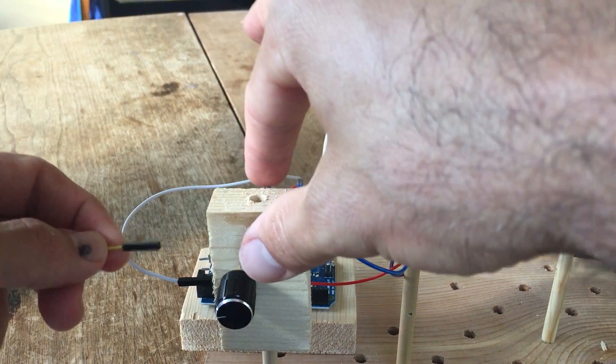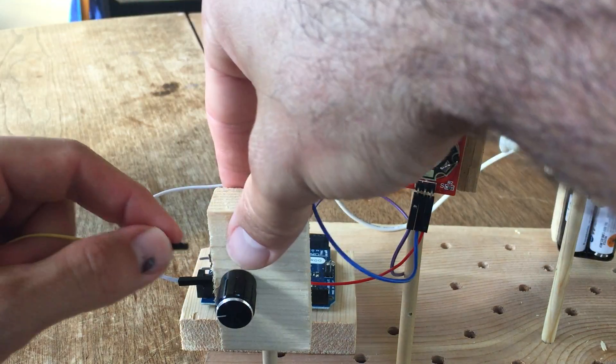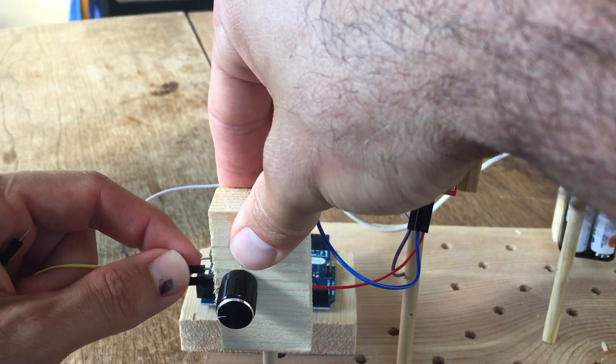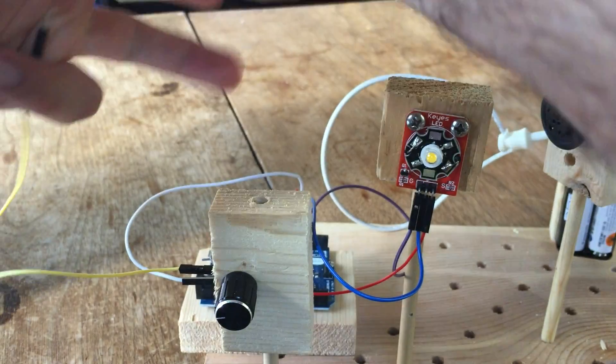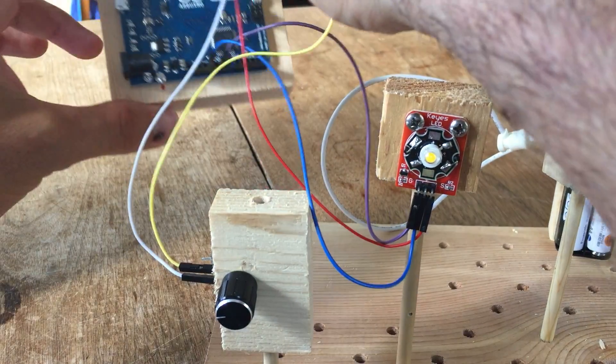Next, we're going to connect the center pin on your potentiometer block, which is going to be your signal, your analog signal, back to A2 on your Arduino.